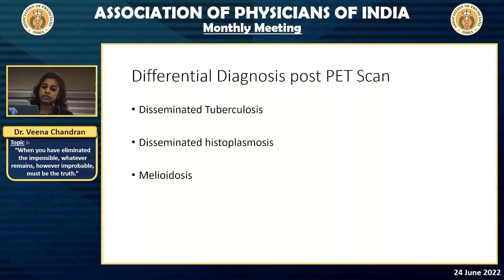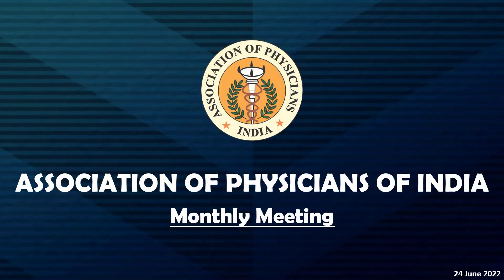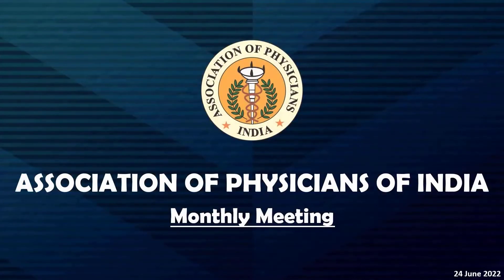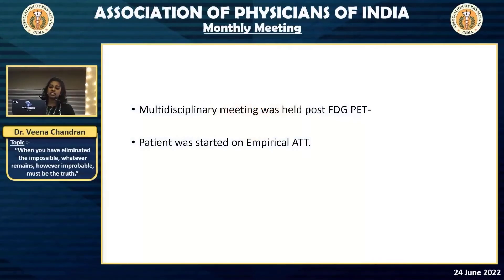Post the PET scan, we considered a possibility of disseminated tuberculosis, as he had TB in the past and there were necrotic lymph nodes — the vascular aneurysms were difficult to explain, though. We also considered melioidosis, and histoplasmosis as a more distant differential. We held a multidisciplinary meeting comprising internal medicine, critical care, immunology, and infectious diseases, and we decided to start the patient on empirical anti-tuberculosis therapy.